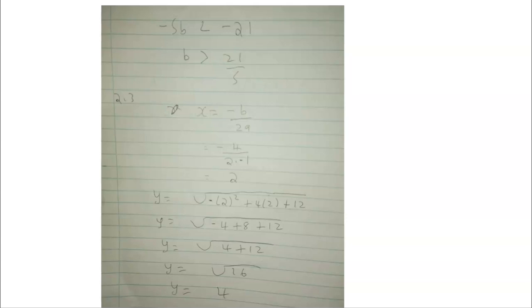For 2.3, it was about finding the maximum. In Grade 11, we use the formula x equals negative b over 2a. In Grade 12 you could use the derivative instead. From the trinomial, b equals 4 and a equals negative 1, so x equals negative 4 over 2 times negative 1, which gives x equals 2. Substituting x equals 2 back into the expression gives the square root of 16, which is 4 — confirming the maximum value.